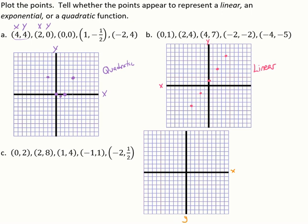For part c, we're going to be graphing (0, 2), (2, 8), (1, 4), (negative 1, 1), and (negative 2, 1/2). This is going to represent an exponential function, because we have a curve there, but it's not making a U-shape — it's getting lower but it won't cross the x-axis. This is how you can plot points and use their shape to determine if it appears to be linear, exponential, or quadratic.